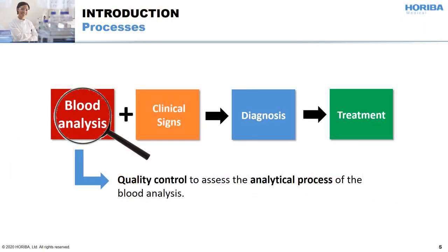To start, and regarding the process, blood analysis and clinical sign observations are leading to make a diagnosis, and then to provide the most appropriate treatment to the patient. Quality control is the assessment of the analytical process of blood analysis.